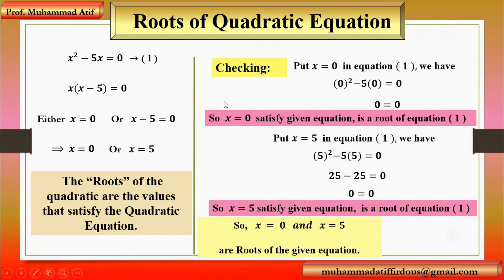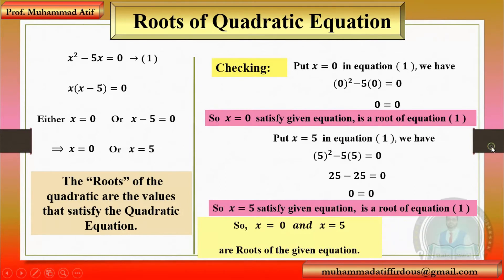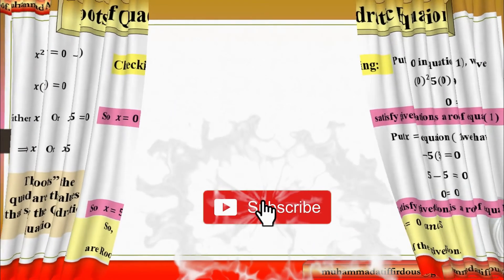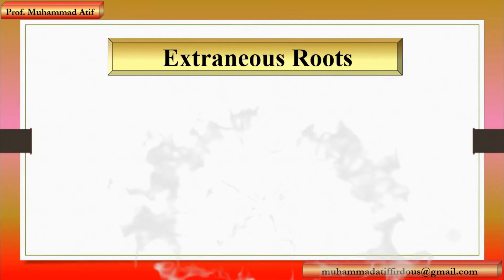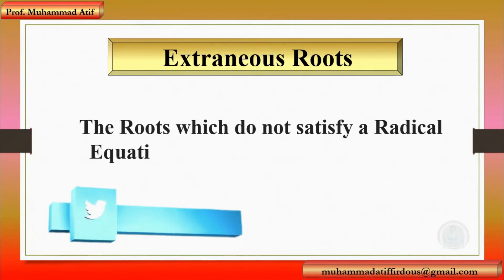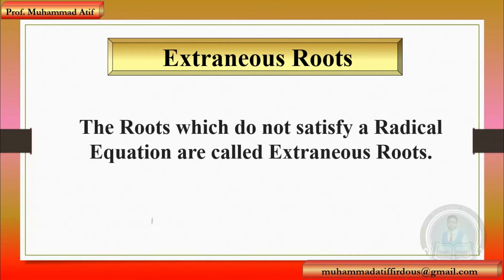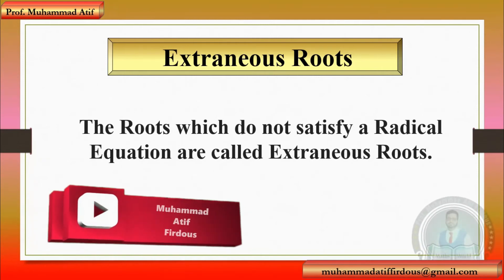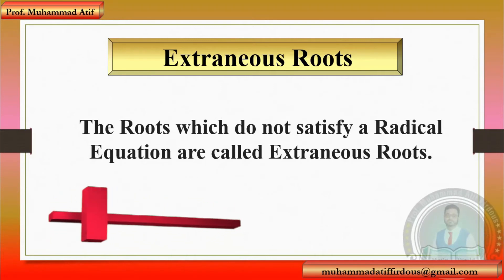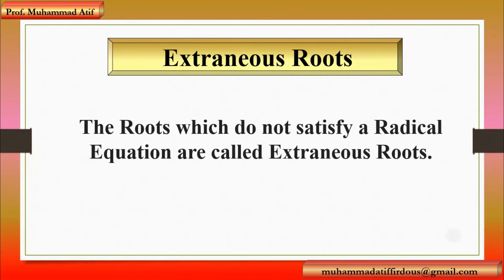So in a quadratic equation we can check that the given values are roots of the equation. But in the case of an extraneous root, we must check this. Now we move on to our main definition: what is an extraneous root? The roots which do not satisfy a radical equation are called extraneous roots. You have to find the values of x and put them into the given radical equation. If the left-hand side is not equal to the right-hand side, then the given value is an extraneous root.